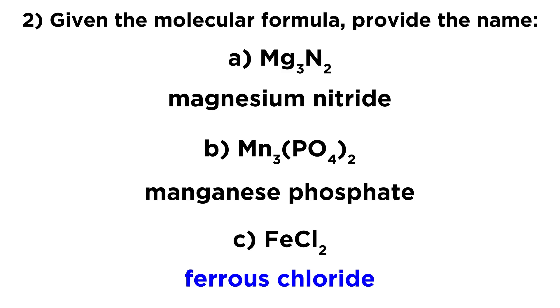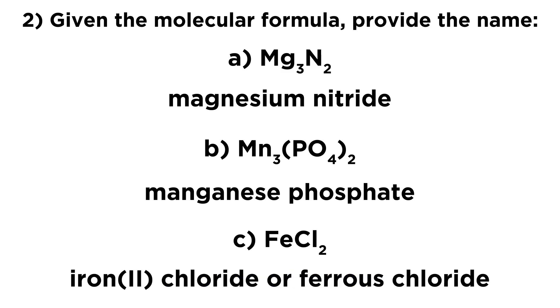So we have iron two chloride, and a nickname is ferrous chloride. We can also call this ferrous chloride, whereas if iron was in oxidation state three, that would be ferric. But it's in two. So this is iron two chloride, or ferrous chloride. And these are the names associated with these molecular formulas.